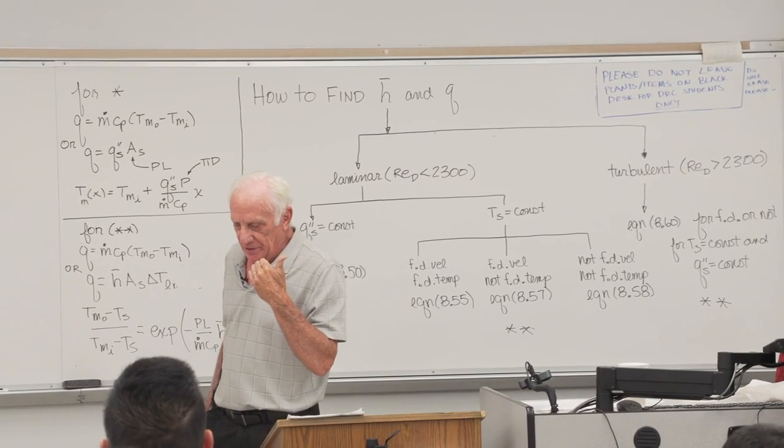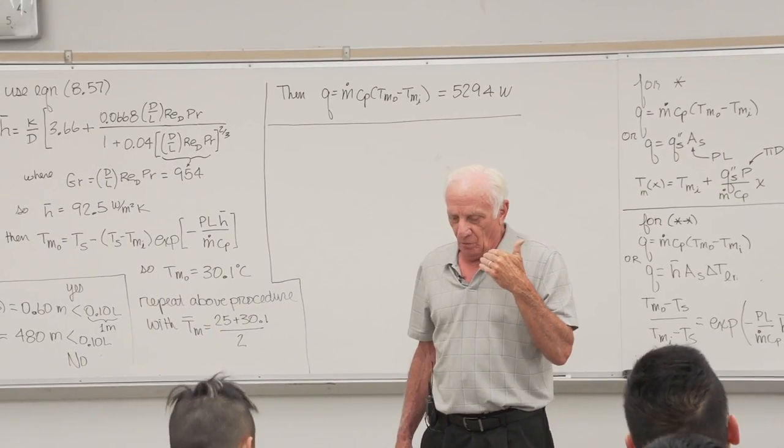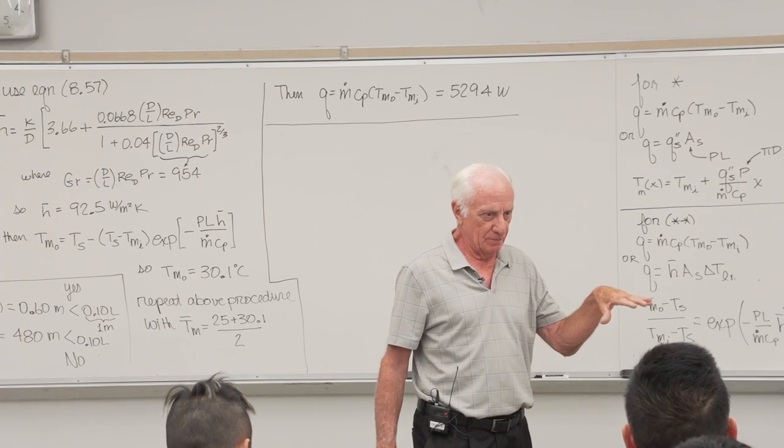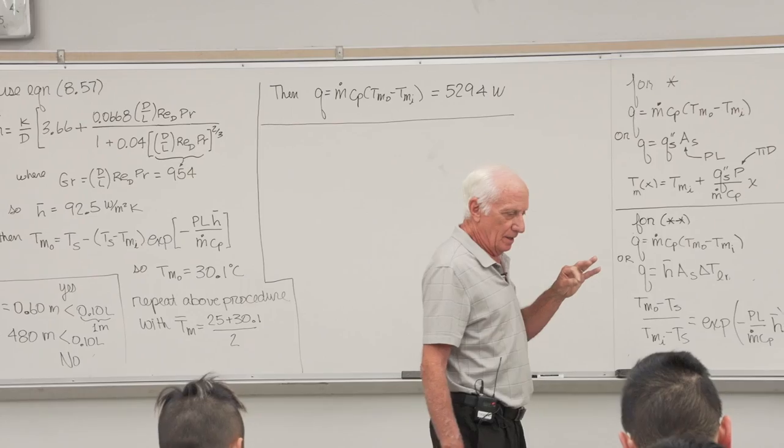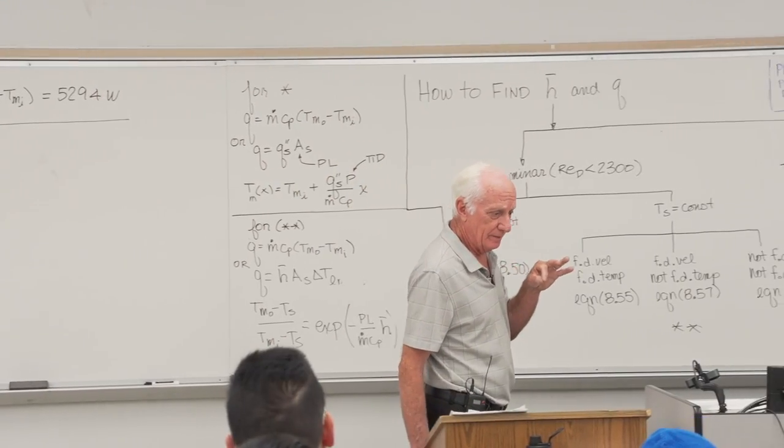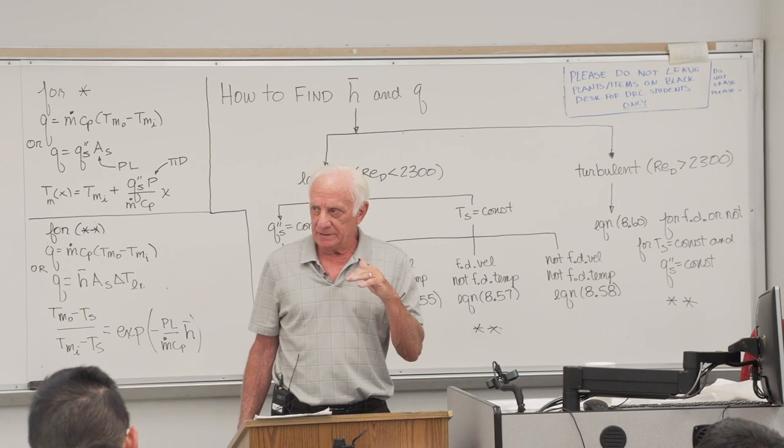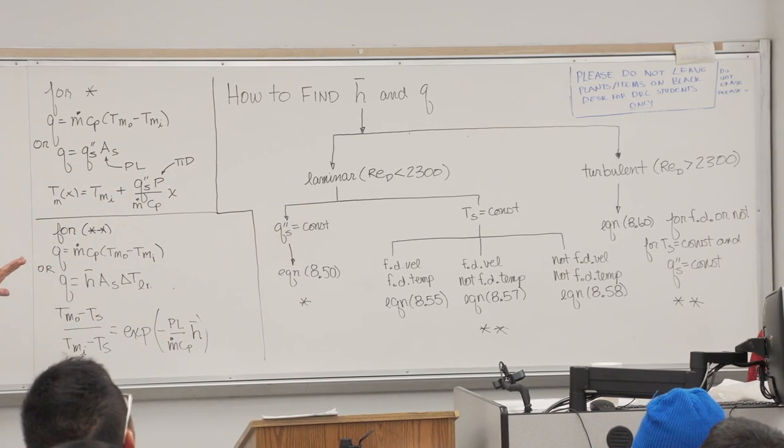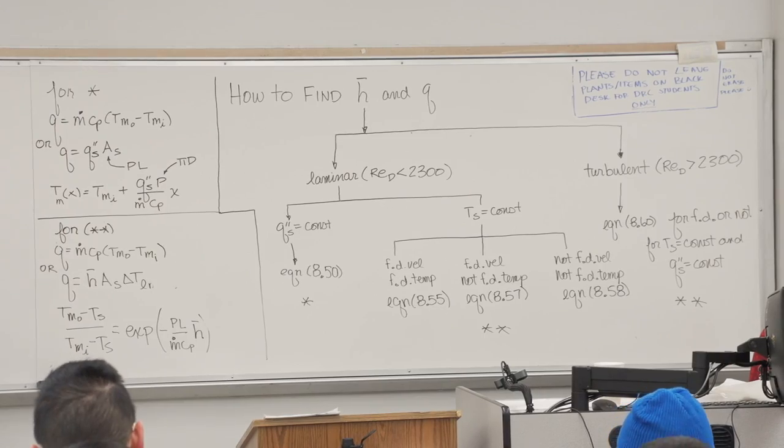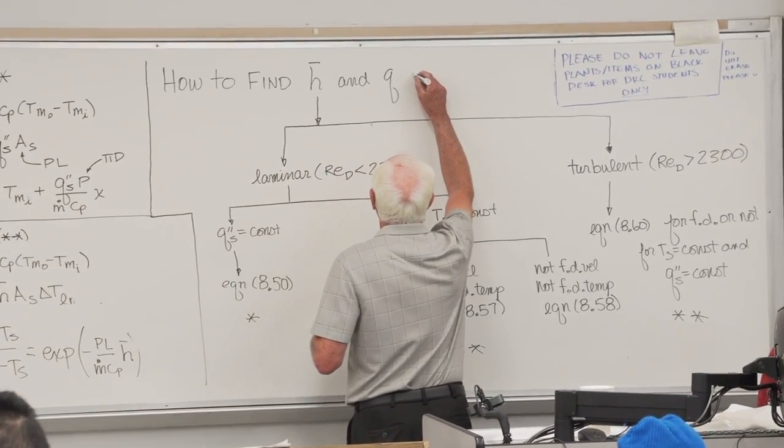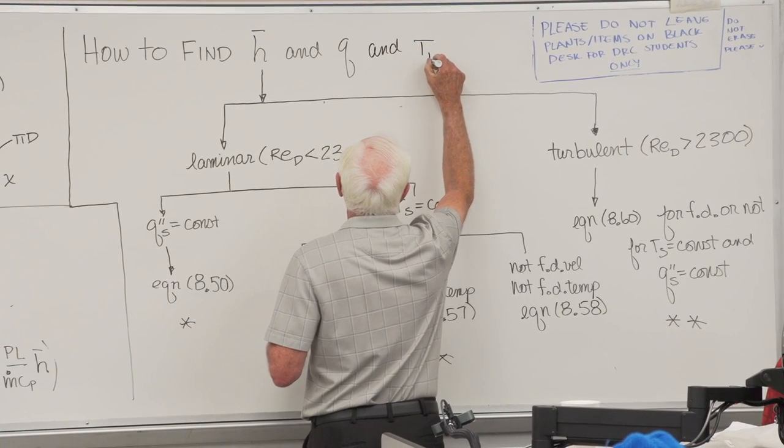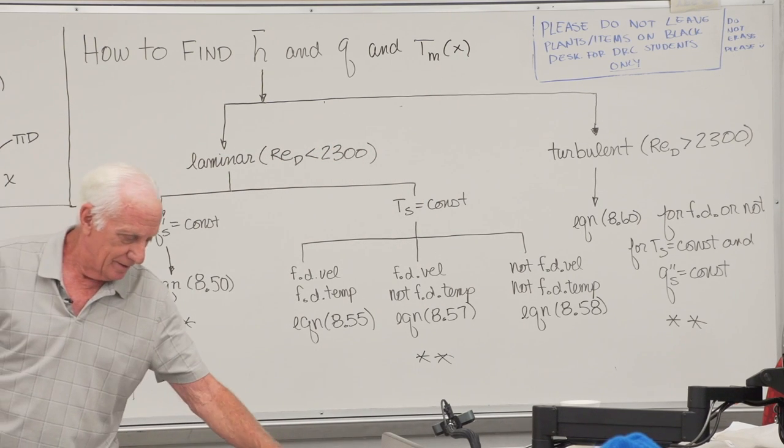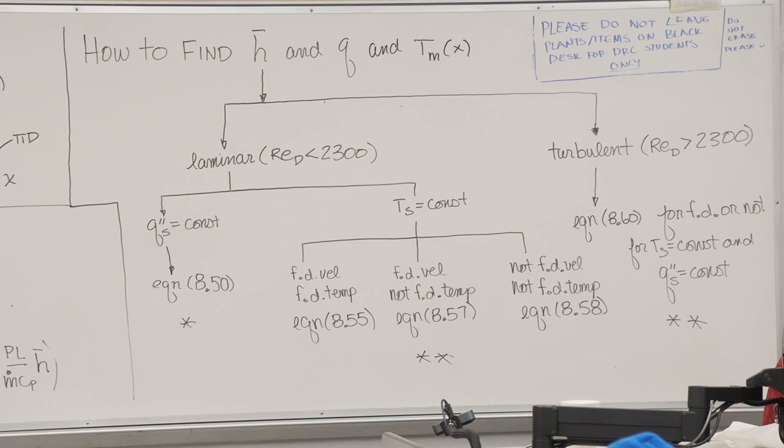Chapter 8, internal flow in a tube. What we did is we found H, then knowing H, we can find the temperature variation along the tube axis, T mean, and we can find the heat transfer by convection in the tube. The big question is how do I find H, the convection heat transfer coefficient?